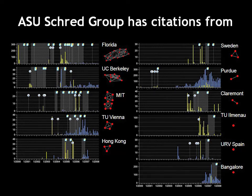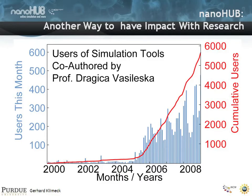As I mentioned, this tool comes from Dragica Vasileska. What we now offer every author is not only that their tools are getting cited, but we also give them graphs and statistics on how many people are using their tools — it's like an incentive program. Her Schred tool and other tools she has online have been used on average by 200 to 300 users each month. And if you look at the integral number of different users, it's approaching 6000.